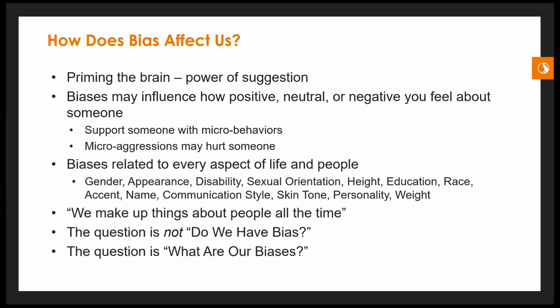Our biases influence how positive, neutral, or negative we can feel about someone. You can support someone with micro behaviors and also hurt someone with micro aggressions. Howard gives an example of meeting somebody as an adult with a blue sweater on and just feeling uneasy — maybe because somebody with a blue sweater back in grade school embarrassed him. If we don't know our fast brain is telling us 'blue sweater equals danger,' it takes our slow brain to say, 'Wait, I've never met this person — why am I feeling uneasy?' Howard said biases relate to every aspect of life and people; he can cite a study for almost any human characteristic and show that we can be biased.